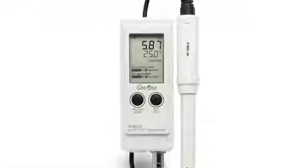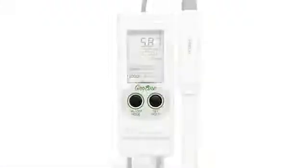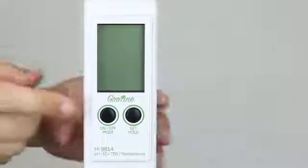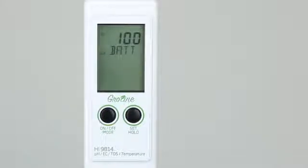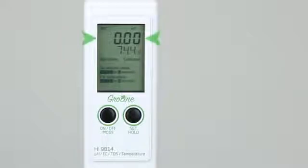All operations are performed through the use of two buttons. Press the on-off mode button to turn the meter on. Note the battery percentage level upon startup. The meter will display the last selected parameter, temperature, stability indicator, and instructions on how to enter calibration and setup modes.